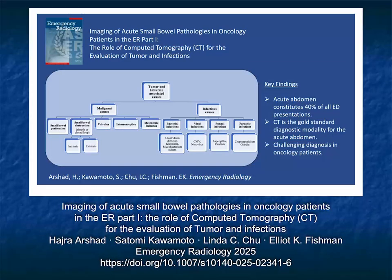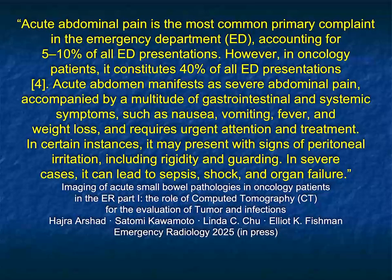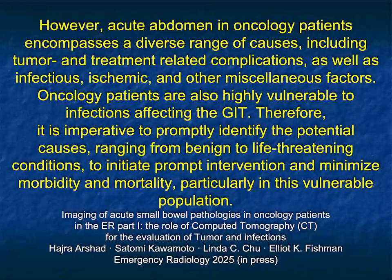In the first part, we talk about some of the basics and the challenges in the ER patient. In oncology patients, 40% of ED presentations are the acute abdomen, and the range of possibilities is extensive. What CT helps us do is narrow down the differential and often make a specific finding — whether the patient simply needs observation, discharge, or even emergency surgery. Complications with bowel can lead to sepsis, shock, and even organ failure. In the oncology patient we discuss infectious, ischemic, and other factors.